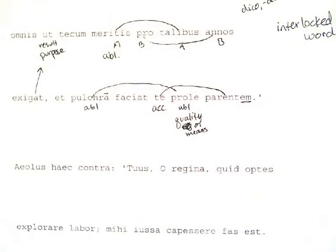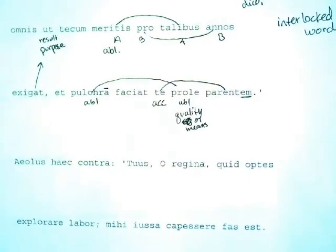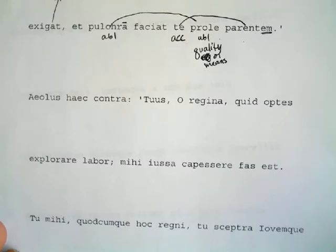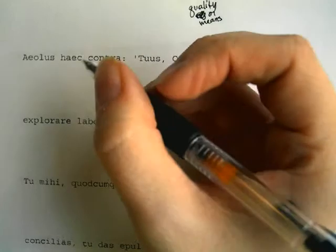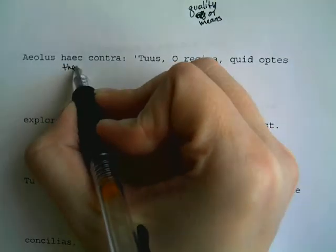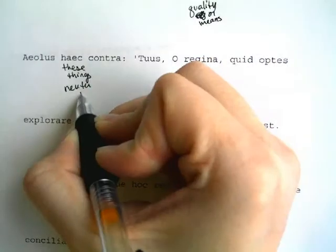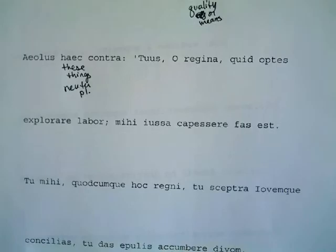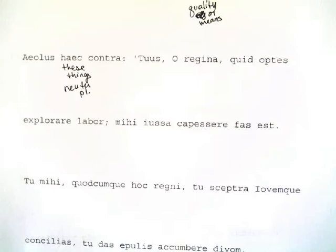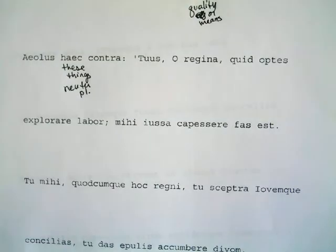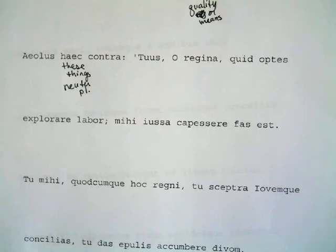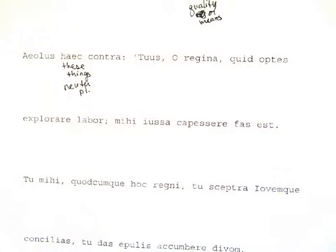Aeolus responds — it's just what he wanted to hear. Aeolus haec contra. Haec is a good basic word meaning 'these things' — it's neuter plural, and anytime you have neuters you can use the word 'things.' Contra means 'back' or 'against,' and there's no verb, so we supply 'he replied.' He said these things back to her — contra carries that idea of replying or going back.